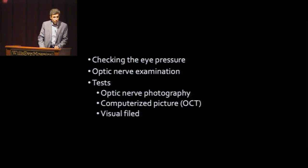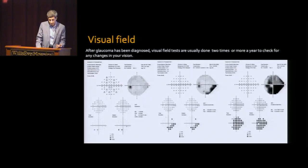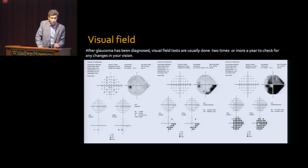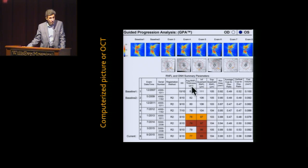For monitoring glaucoma, we do the same things — checking eye pressure, checking the optic nerve — and we look for any change in the regular photography, in the OCT, or in the visual field test. Generally, the visual field test needs to be checked two or more times a year, though some patients may need it more frequently depending on disease severity and progression. The OCT is also typically checked twice a year, and we look for changes in the numbers over time.